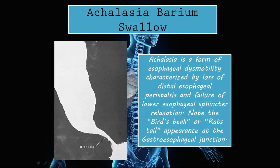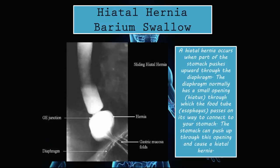In achalasia, there is failure of the GEJ to relax, and because it's constricted so tightly it doesn't allow food to pass freely from the esophagus into the stomach. On barium swallow we can note a bird's beak or rat's tail appearance. Above it you can see dilation of the esophagus because food is collecting there, unable to push past the obstruction. This causes esophageal dilation and thinning of the GEJ — a very tight lower esophageal sphincter. This is typically what achalasia looks like on a barium swallow test.